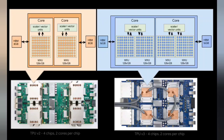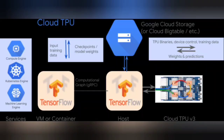Built for artificial intelligence on Google Cloud. Architected to run cutting-edge machine learning models with AI services on Google Cloud, Cloud TPU delivers the computational power to transform your business or create the next research breakthrough. With a custom high-speed network that allows TPUs to work together on ML workloads, Cloud TPU can provide up to 11.5 petaflops of performance in a single pod.